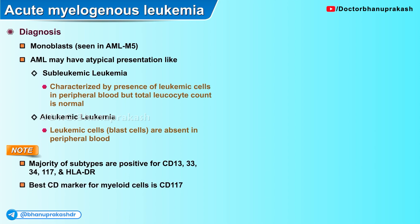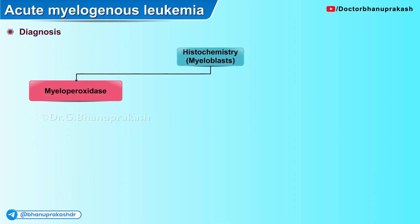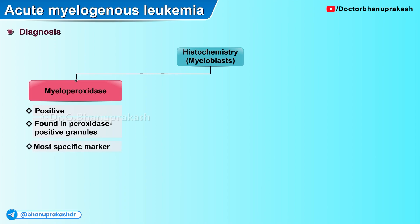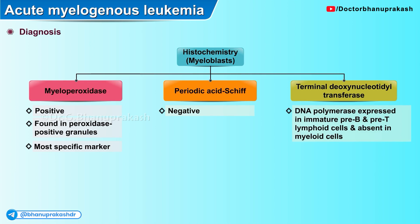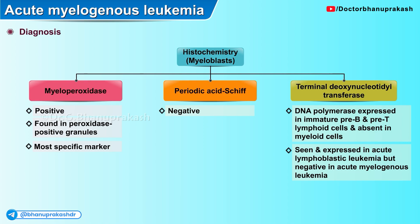The best CD marker for myeloid cells is CD117. Regarding histochemistry, myeloblasts are myeloperoxidase positive, found in peroxidase-positive granules — this is the most specific marker for acute myelogenous leukemia. They are periodic acid-Schiff (PAS) negative. Terminal deoxynucleotidyl transferase (TdT) is a DNA polymerase expressed in immature pre-B and pre-T lymphoid cells but is absent in myeloid cells. Hence, TdT is expressed in acute lymphoblastic leukemia but is negative in acute myelogenous leukemia.